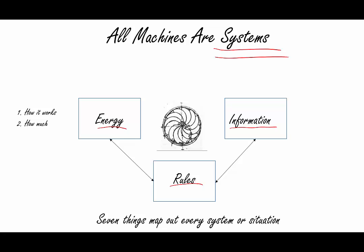Those seven things are how it works and how much of something you're measuring. You can see that based on the energy in the system, you need to also keep track of what is happening.